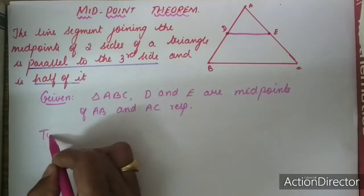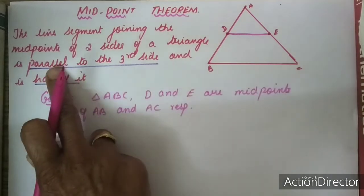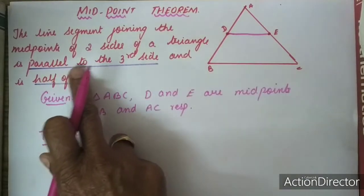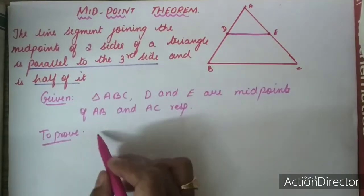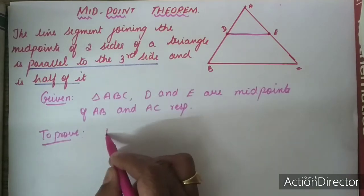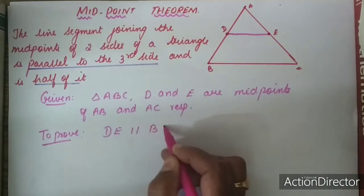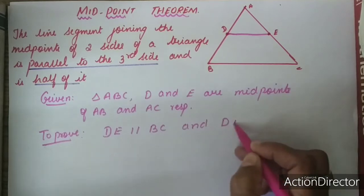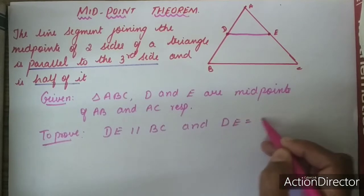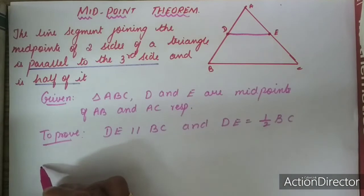We have to prove: DE is parallel to BC and DE is equal to half of BC.